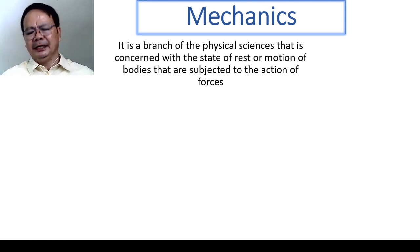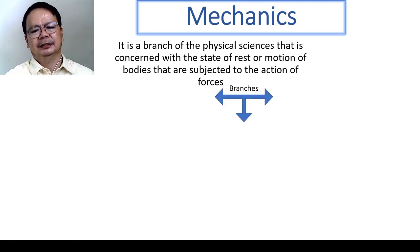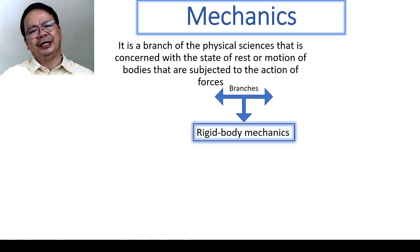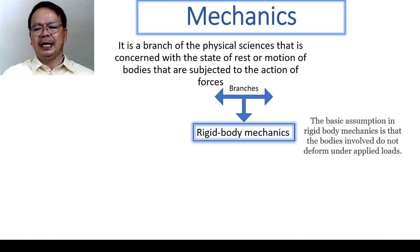Under mechanics, there are three branches. The first branch is the rigid body mechanics. In this branch of mechanics, the basic assumption is that bodies that are involved or subjected to loading are not deforming or not subjected to change in shape. In short, it is assumed that bodies that are subjected to loadings are rigid.